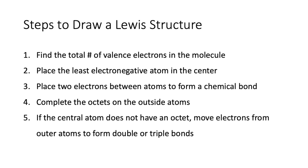So the first step is to find the total number of valence electrons in the molecule which you're going to do by looking at the group number that the element is in which will tell you how many valence electrons it has and then you're going to sum up all of them in the molecule.